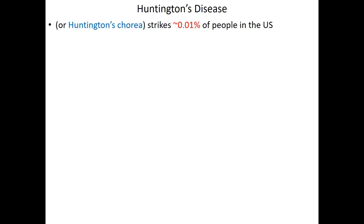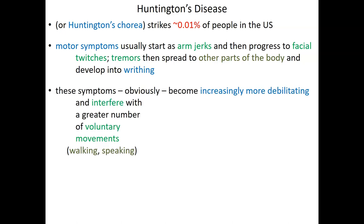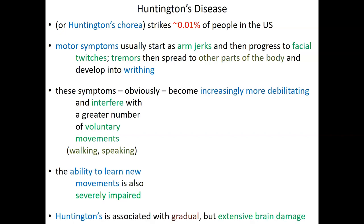Huntington's disease, or more officially known as Huntington's chorea, strikes about 0.01% of people, or one in every 10,000. Symptoms are usually motor-oriented, starting as arm jerks and twitches, then progressing to facial twitches, tremors, and spreading to other parts of the body, ultimately developing into full writhing. These symptoms become increasingly more debilitating and interfere more and more with voluntary movements — speaking, feeding oneself, walking — basically anything we control with thought becomes harder and harder.